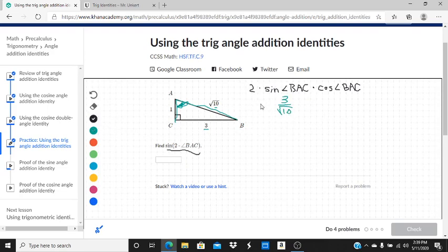Okay, and we're going to multiply that by 2. And then we're going to multiply by the cosine of angle BAC. So cosine is going to be 1 over the square root of 10. So 1 over the square root of 10.